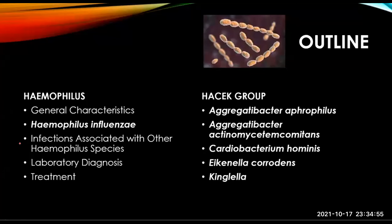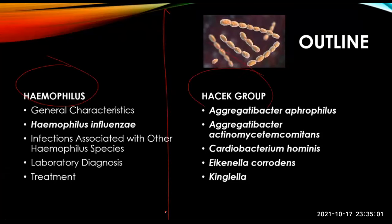For the outline, we have the Haemophilus and the HACEK group. I will be talking first about the Haemophilus — the general characteristics — and under which we have the species Haemophilus influenzae and infections associated with other Haemophilus species, and we have the lab diagnosis and the treatment. For the HACEK group, we'll be talking about Aggregatibacter aphrophilus, Aggregatibacter actinomycetemcomitans, Cardiobacterium hominis, Eikenella corrodens, and Kingella.